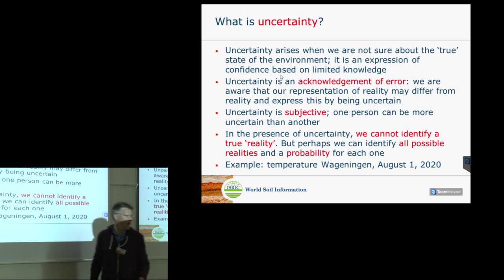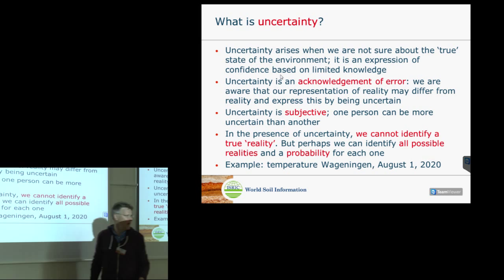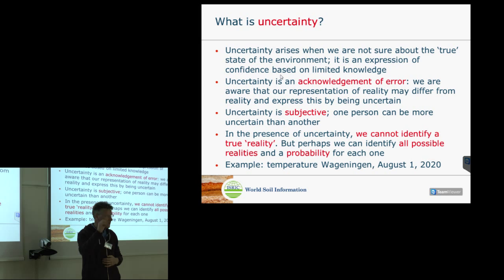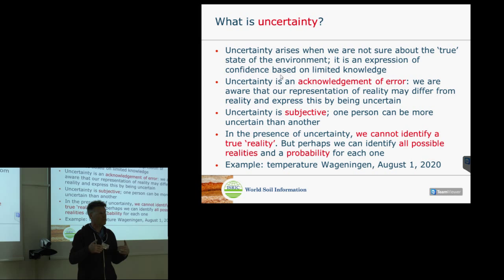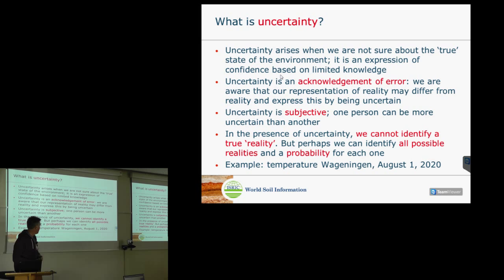If we are uncertain about reality, it means we cannot identify one single true reality. We know it exists — the pH of the soil has a certain value — we just don't know it. But we're not completely ignorant: we can make a prediction and hopefully quantify how accurate it is. We cannot give one true single outcome, but perhaps we can list all possible outcomes and attach a probability to each. That is how we start quantifying uncertainty with a probability distribution — a statistical model of uncertainty.